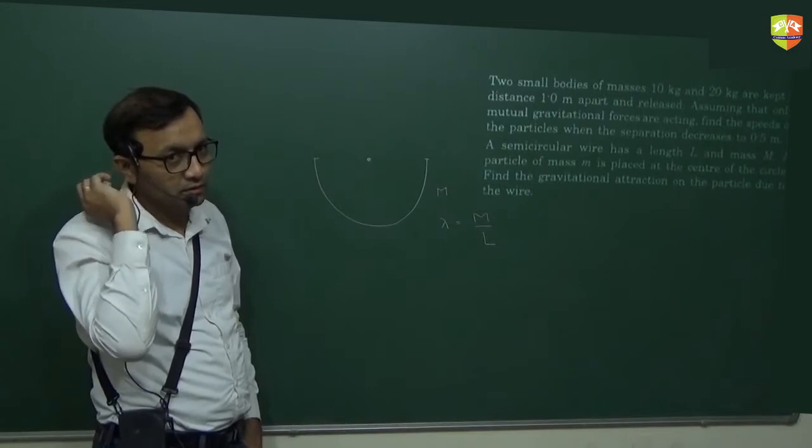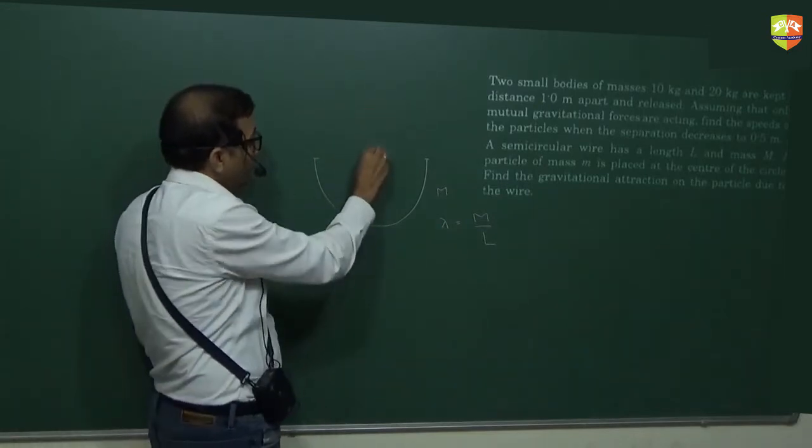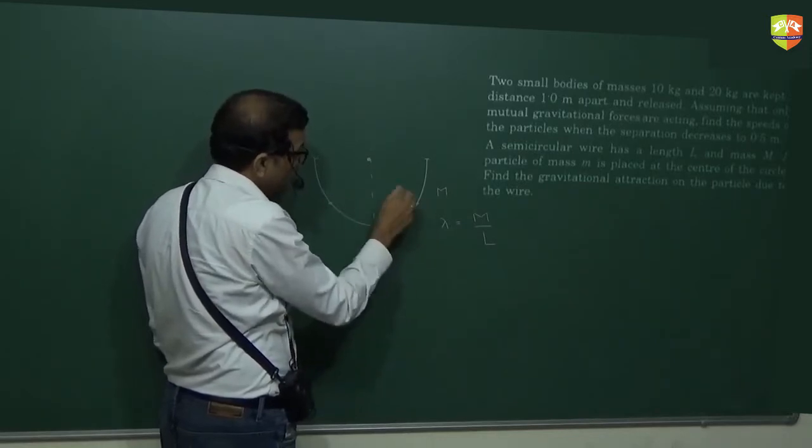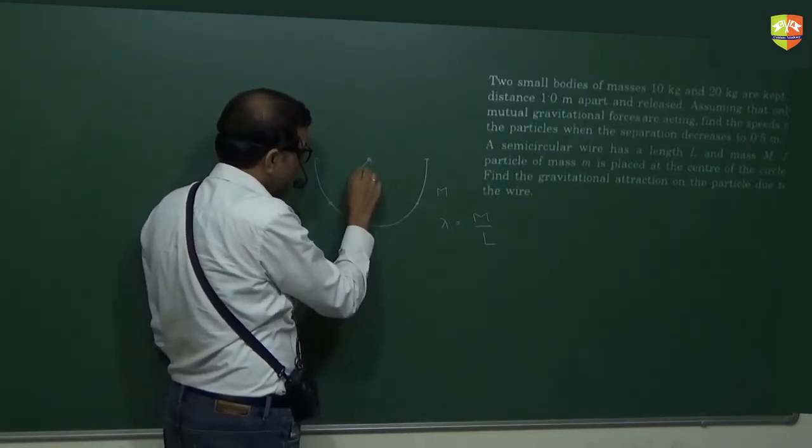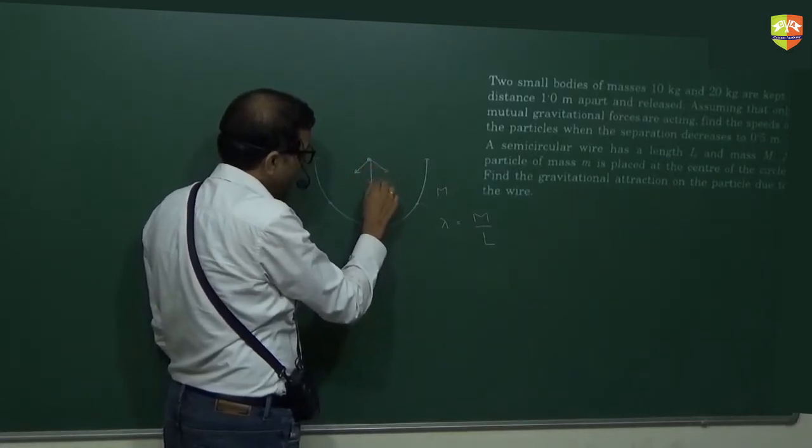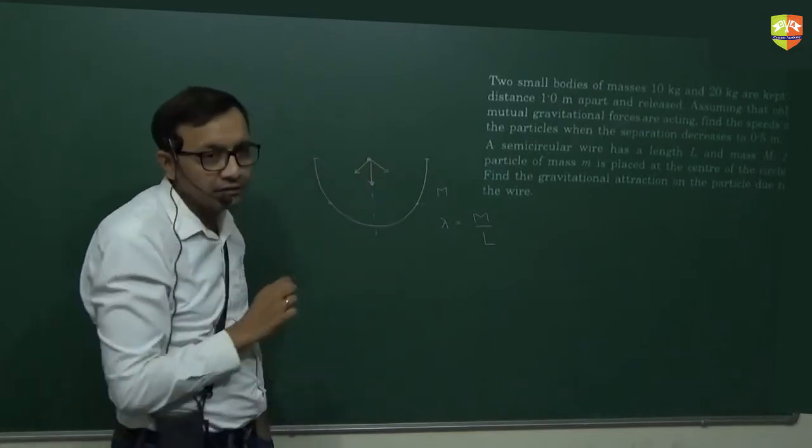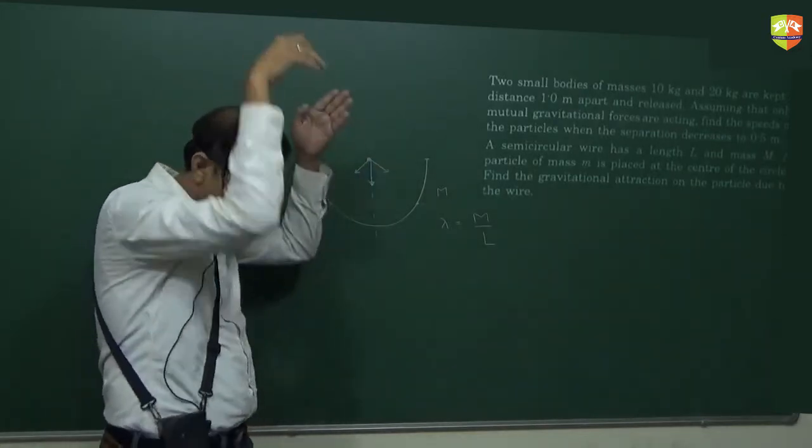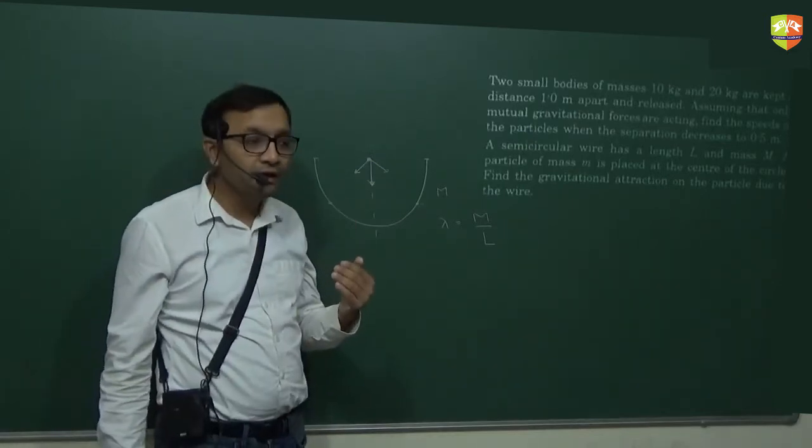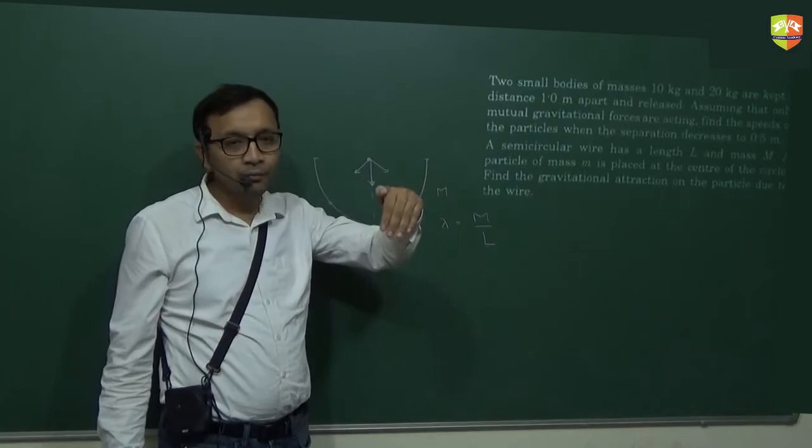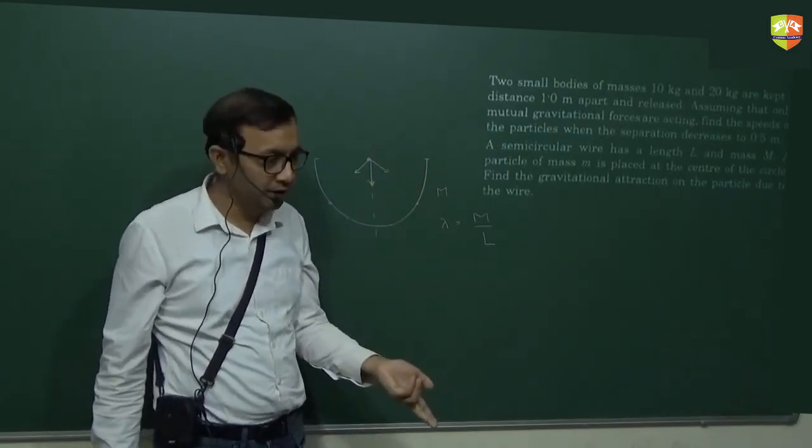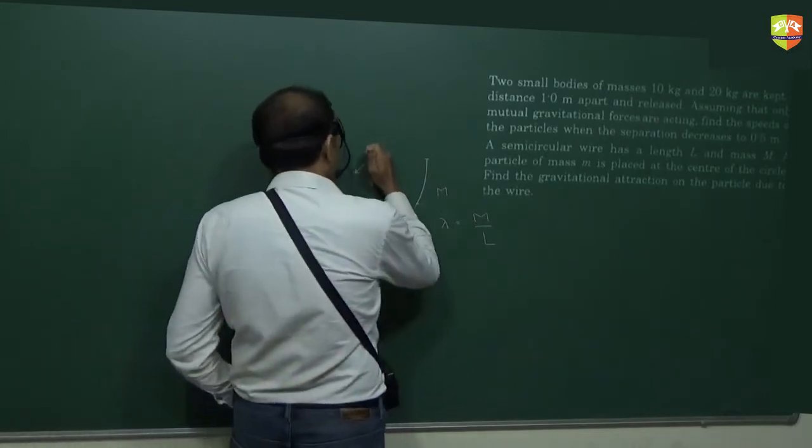Because if you draw a dotted line like this, every horizontal line you draw, you'll find two symmetrical points on this wire that will attract this in this way and that way. So net force will come out to be like this. The component in horizontal direction will get cancelled away. Due to symmetry, the net force will be down. So I just need to integrate the downward component of the force. Because horizontal component of force integration is zero. Summation is zero due to symmetry.